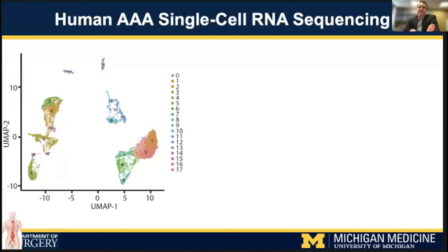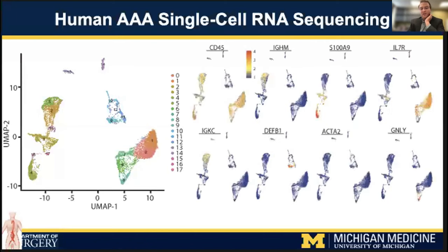For our single-cell analysis, after cells underwent processing, we had a total of 50,290 cells that passed quality controls and were then analyzed in an unsupervised clustering fashion. Using single-cell RNA sequencing, we were able to arrange cellular populations composing the aorta into unique clusters using canonical marker gene analysis as well as gene ontology analysis. We initially identified 17 subclusters, and after conserving genes within these clusters, we identified eight major cell populations within the aortic wall.